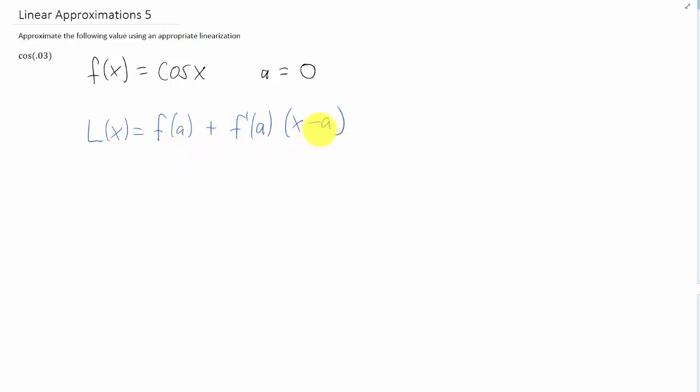Here is the formula for our linearization. The first thing that we could do is we could take a derivative of the function that we chose. The derivative of cosine is negative sine, and we can plug in the a value that we chose. Plugging in x equals 0 is going to give us negative sine of 0, which is just 0.